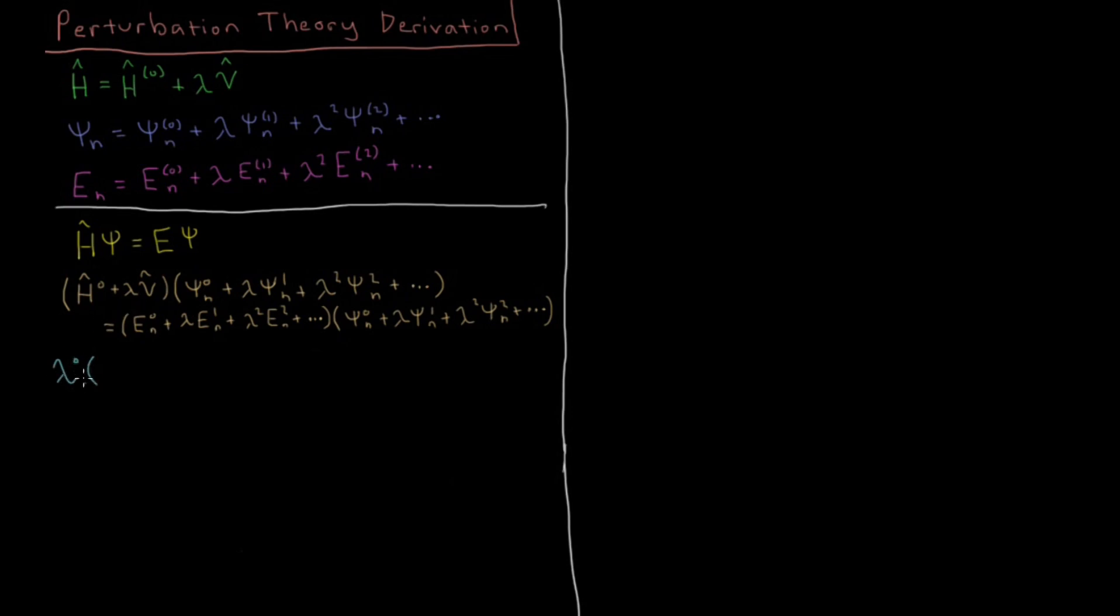So the first are going to be zero-order, or terms that don't depend on lambda. Lambda to the zero being 1, we're just going to have H0 psi0 for the nth state. Then on the other side, let's gather up all the terms that also depend on lambda to the zero, which is just going to be E0 times psi0. Then for any value of lambda that we pick, this equation has to be true. So this just gives us H0 psi0 equals E0 psi0. This is just the Schrodinger equation for the reference system.